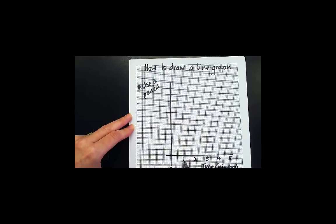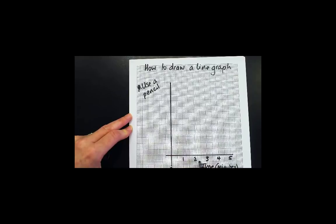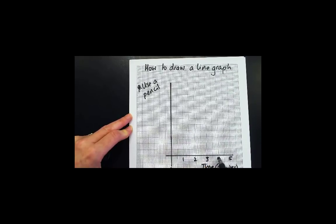Make sure that the scale is even. So for every two blocks here I've got one and another one and another one. So my scale is evenly distributed along the whole axis.